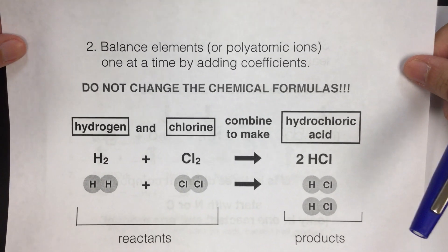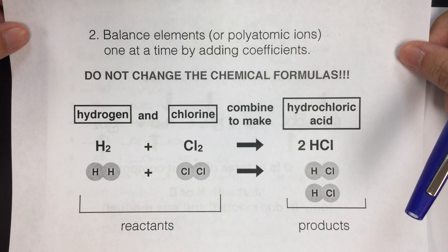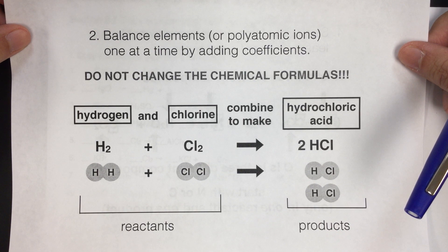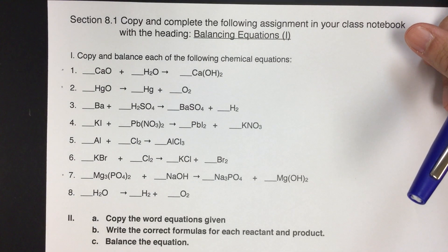well not the first hint, the second hint is that we want to balance elements or polyatomic ions one at a time by adding coefficients. So this is really important, you want to just work on one thing at a time, because it can be overwhelming to look at the entire equation at once. So we're going to do that.